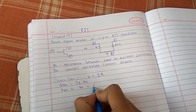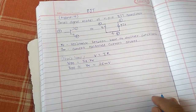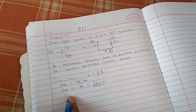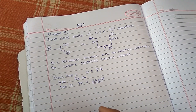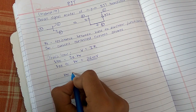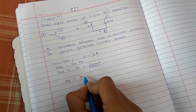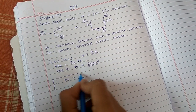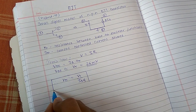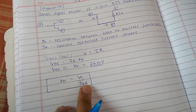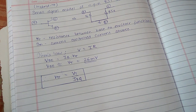VT approximately has the value of 26 millivolts for a BJT transistor. VBE can be replaced by VT because they have almost the same characteristics. So now we get the formula for Rpi as VT upon IBQ, where Q is the Q-point value of IB. This is the first formula — the formula for Rpi. The value of VT is 26 millivolts.